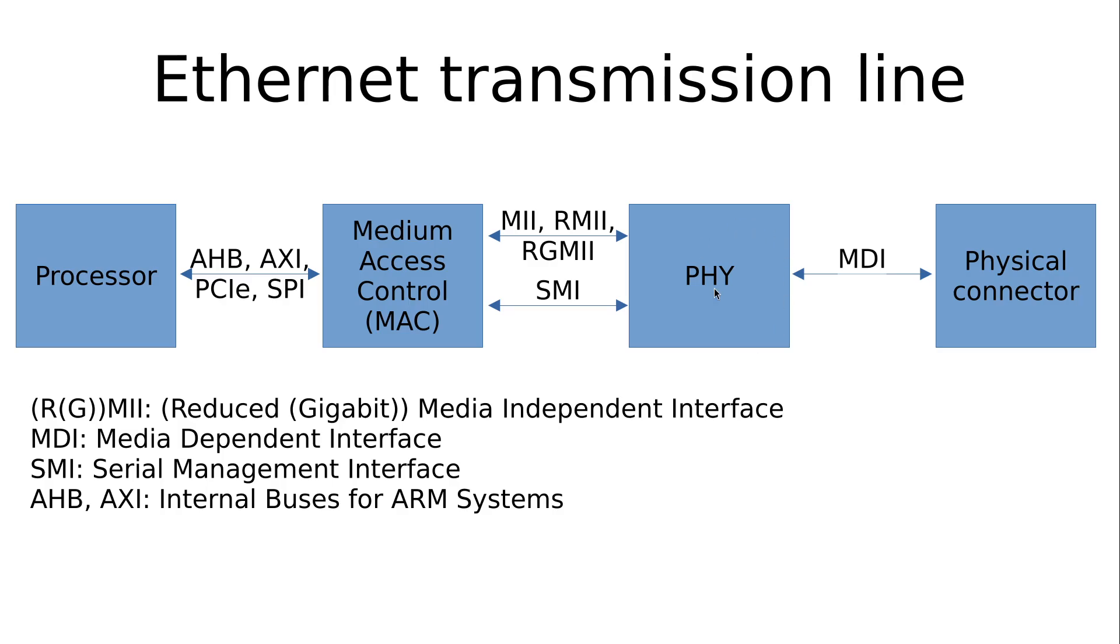Then between the MAC and the PHY there are two interfaces. One interface is for shuffling the data which should be sent or which was received between these two. And this interface is called the media independent interface.